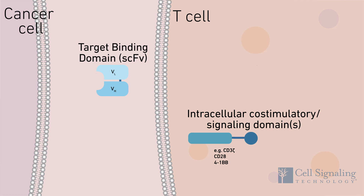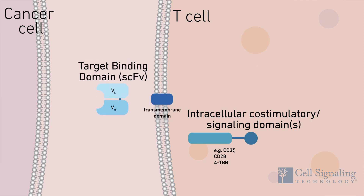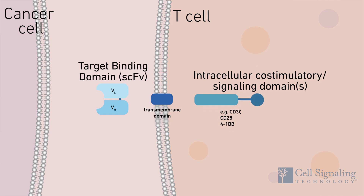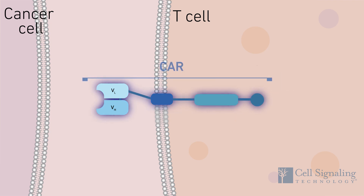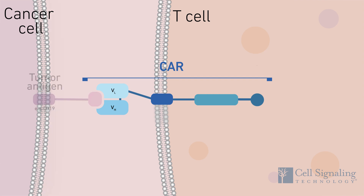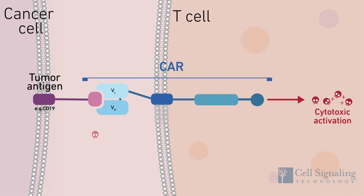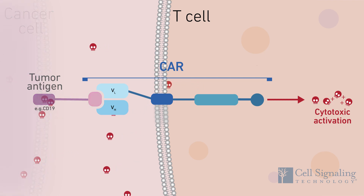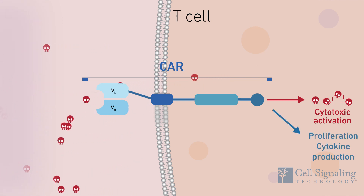The recognition and activation functions are grafted together on either side of a spacer and transmembrane domain to create the synthetic CAR transgene. The receptor is engineered to specifically target surface tumor antigens, independent of MHC antigen presentation, which is often impaired in tumors. Activated CAR-T cells release cytotoxic compounds like perforin and granzyme B that kill the target cell and facilitate tumor eradication. Activation also facilitates other immune functions, including proliferation and production of inflammatory cytokines.